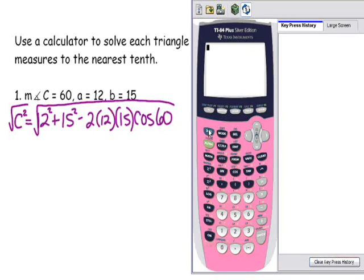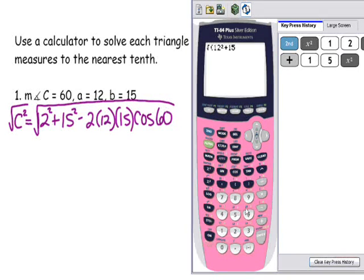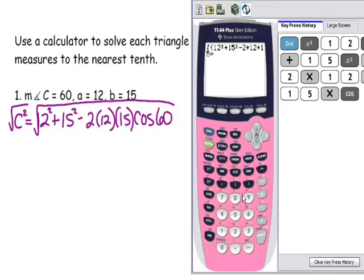So I'm going to take the square root of, so I'm going to push second X squared to get me square root. And then it'll be 12 squared plus 15 squared minus 2 times 12 times 15 times cosine 60. I'm going to go ahead and close my parentheses to end the 60, maybe.